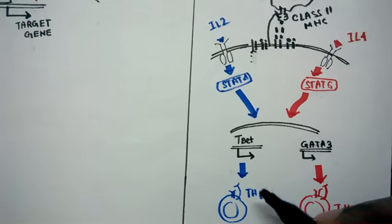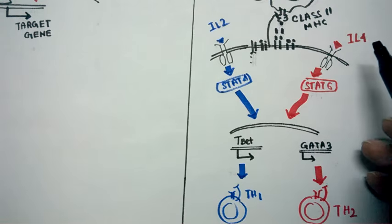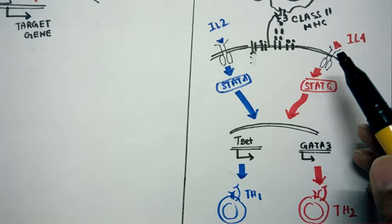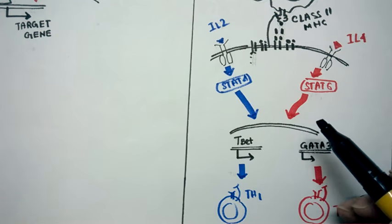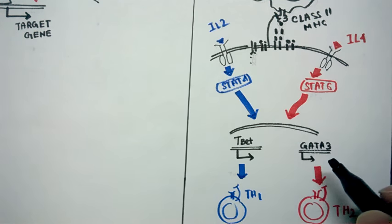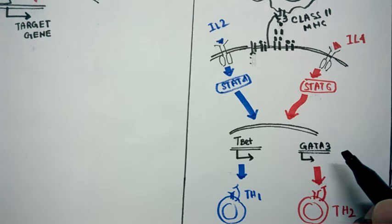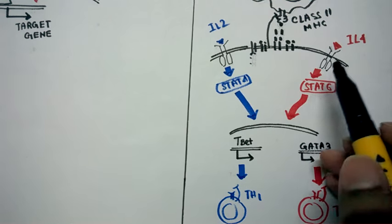On the other hand, if IL-4 is bound to the receptor and STAT6 is activated, STAT6 goes into the nucleus and transcribes GATA3, which is the master regulator for Th2 differentiation. This is how two different ligands can use two different STATs to regulate and transcribe different master regulators.